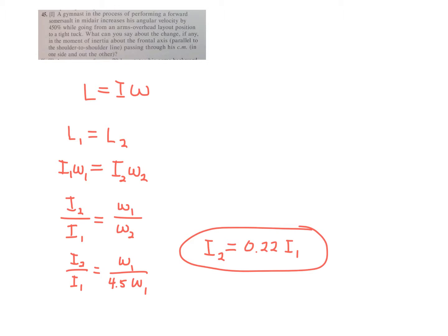So if we rearrange things, I sub 2 over I sub 1 equals omega sub 1 over omega sub 2. That looks wrong, but it's correct if you do the algebra here. And then we plug in, it says that omega2 is 450%, or in other words, 4.5 times bigger than omega1.